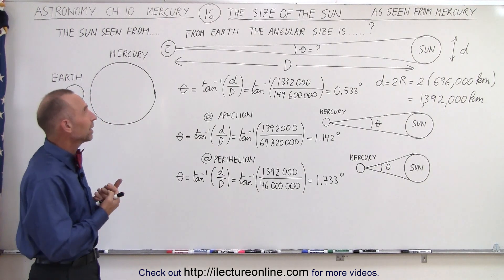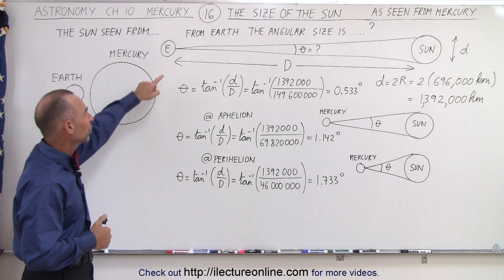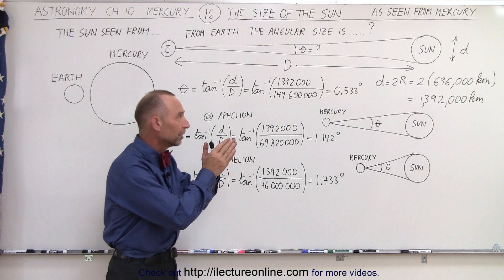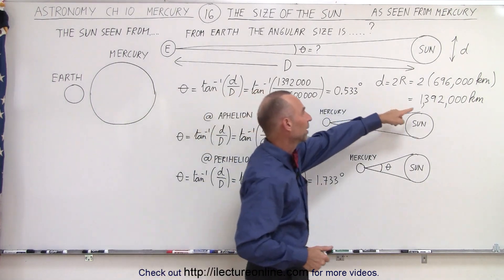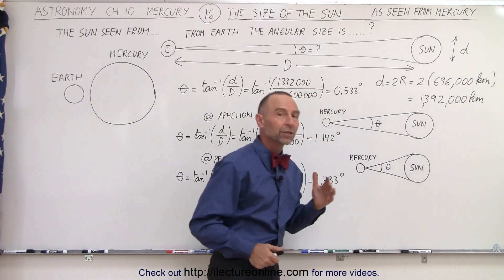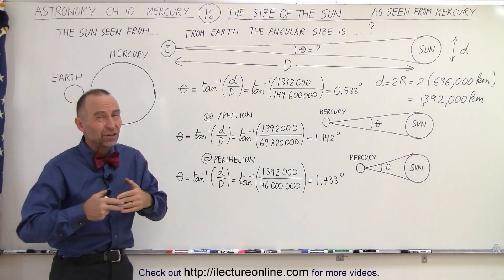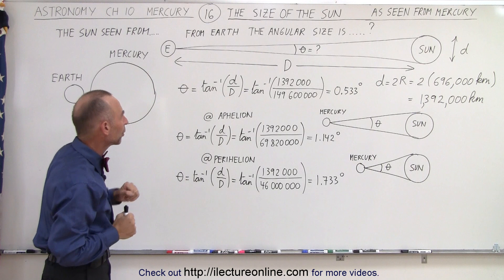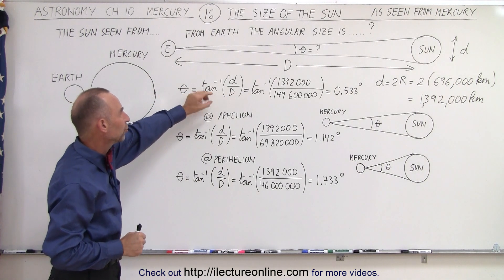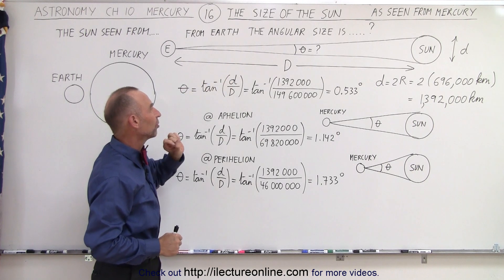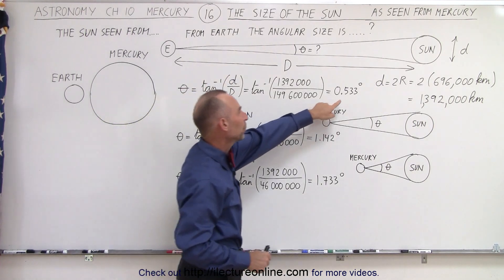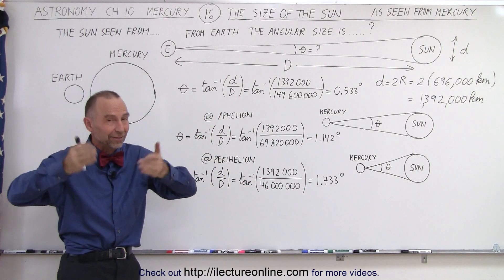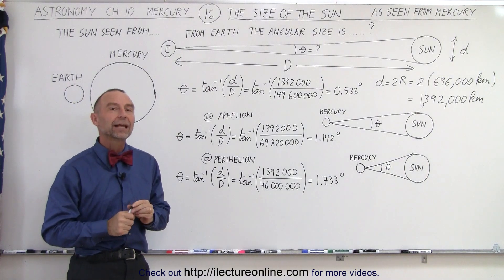So let's compare what it would be like compared to what it is from the Earth. At the Earth, we're at a distance of almost 150 million kilometers from the Sun. The diameter of the Sun will be twice the radius — about 1.4 million kilometers. So to find the angular size of the Sun — and that's how we measure just about everything in astronomy — we take the inverse tangent of the ratio of the diameter of the Sun divided by the distance to the Sun. We end up with a little bit over a half degree, so the disk of the Sun appears to have an angular size of something slightly greater than half a degree.